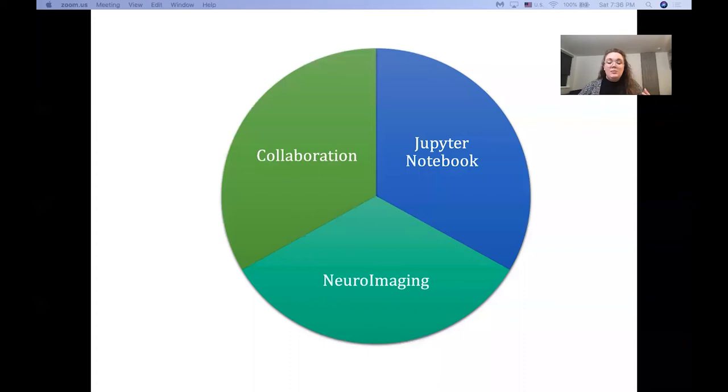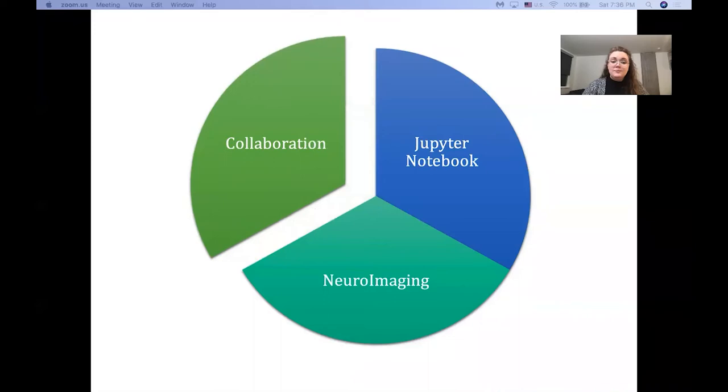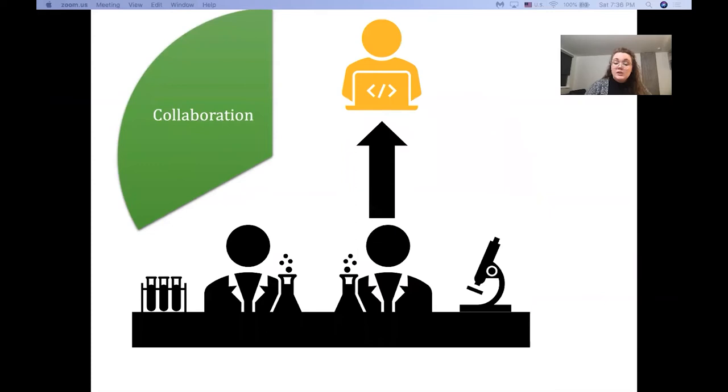So when we talk about neuroimaging and collaboration, we'll get to the Jupyter notebook. But in order to understand why it's so useful for us, first we want to talk about how we train our collaboration. And when we collaborate, what we do is we actually take some of our experimentalists and we train them in data science, such as me.